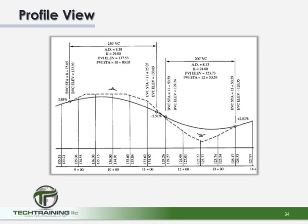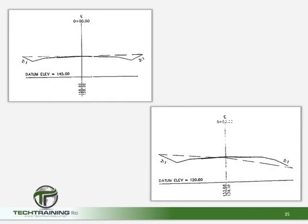The profile view is a cut view along the center line of the project. The center line stationing is along the bottom horizontal scale, and the vertical scale shows the elevations. The dashed line in this view is the existing ground elevations, while the solid line is the proposed finished grade. This is a cross section view of the project. The left side shows a cross section as a fill, while the right side shows the cross section for a cut.